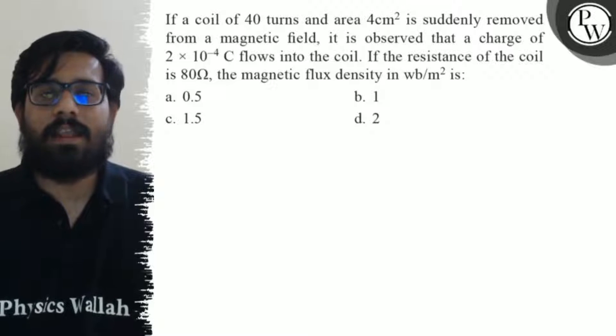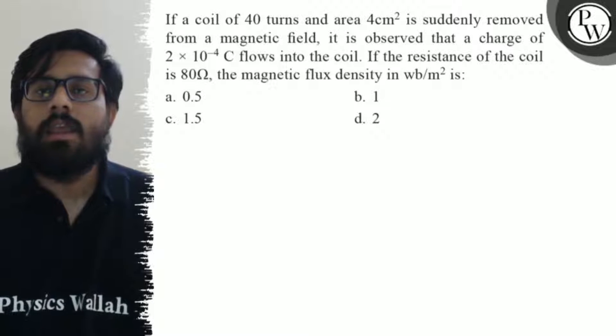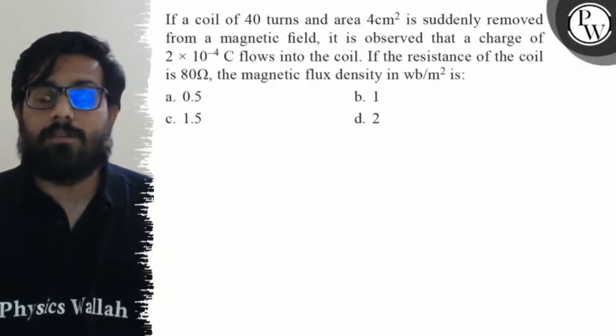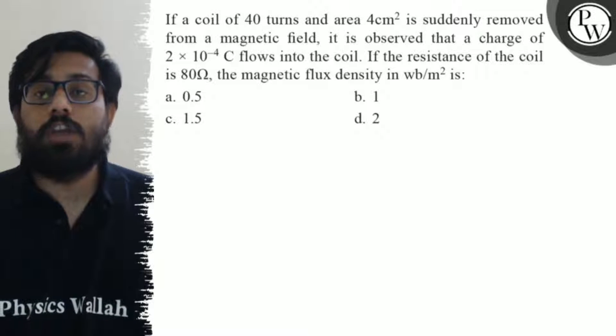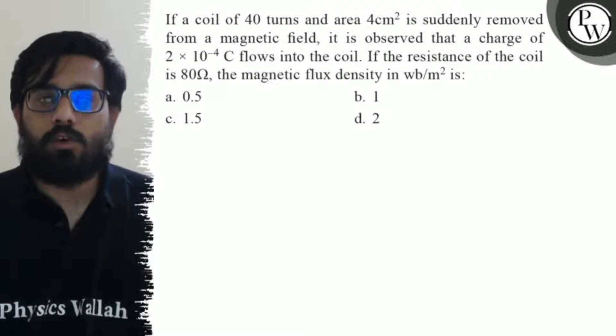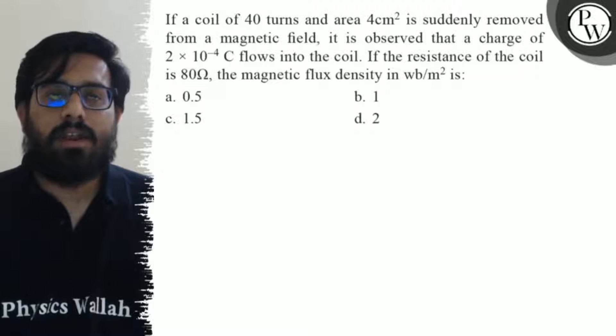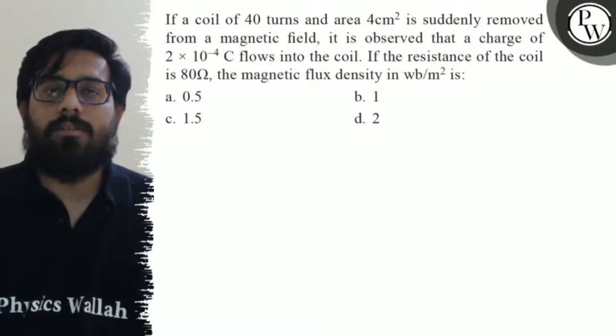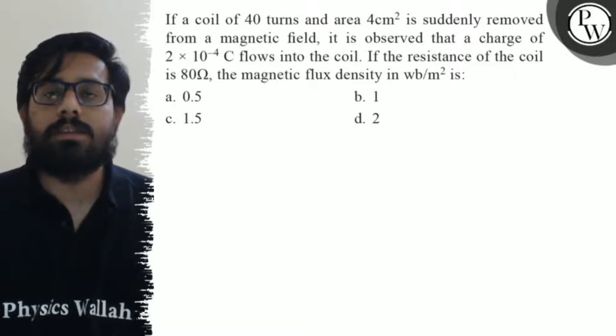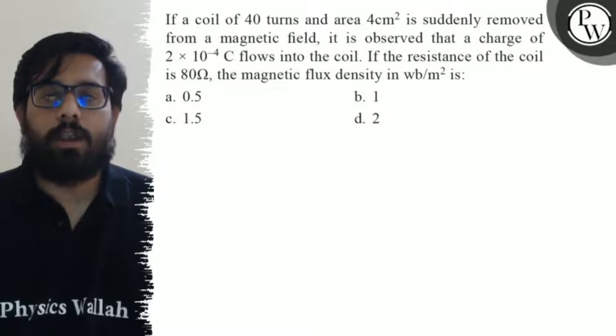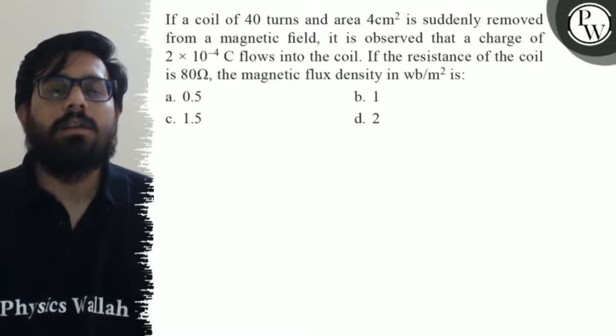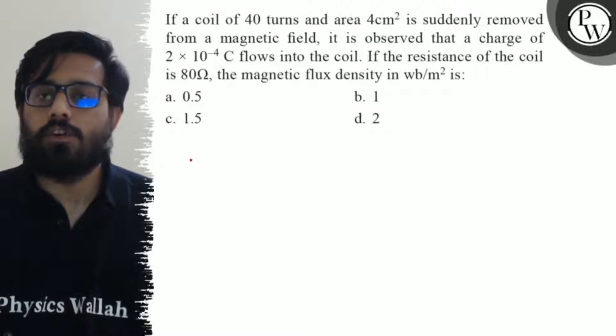Hello, so let's see the question. If a coil of 40 turns and area 4 cm² is suddenly removed from a magnetic field, it is observed that a charge of 2×10⁻⁴ coulomb flows into the coil. If the resistance of the coil is 80 ohm, the magnetic flux density in weber per meter square is: (a) 0.5, (b) 1, (c) 1.5, (d) 2.